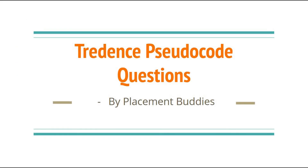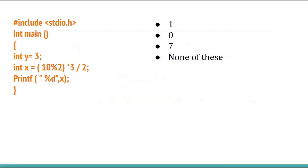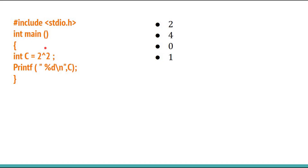The first pseudo-code question: 10 modulo 2 is 0 because when 10 is divided by 2 the remainder is 0. Then 0 × 3 = 0, and 0 ÷ 2 = 0 again. The correct answer is 0, option B. The next question: int c = 2 to the power 2 — the value of integer c is 4. The correct answer is 4, option B.